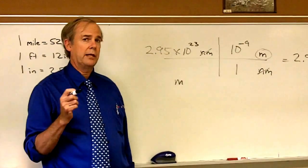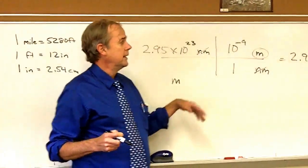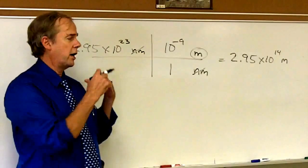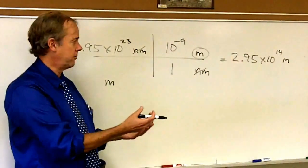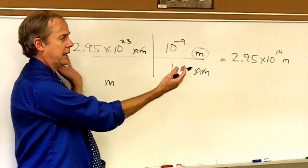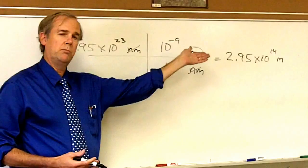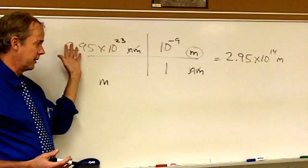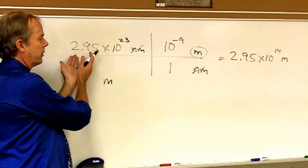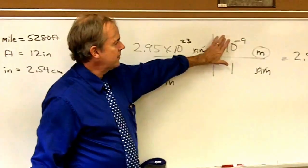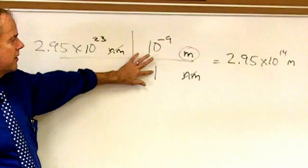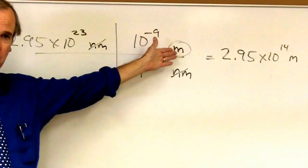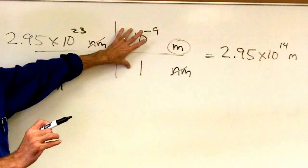Now something to always check with any problem in chemistry or physics is that you have the correct units, or the number is meaningless. And you should always check for how many significant figures are presented in your answer. When you multiply or divide numbers, your answer should be presented with the same number of significant figures as whichever value had the fewest significant figures. This is a measured number that has three significant digits. This is a definition that exists between meters and nanometers. The definition of a nanometer is a billionth of a meter. And definitions are exact numbers.